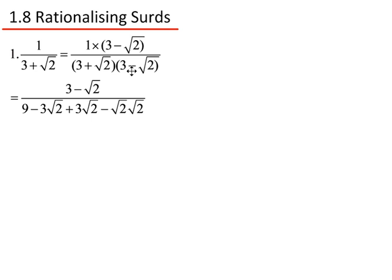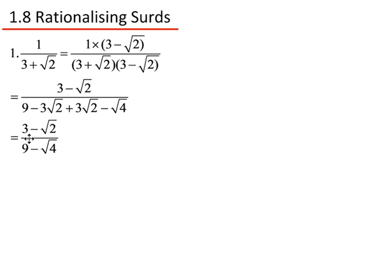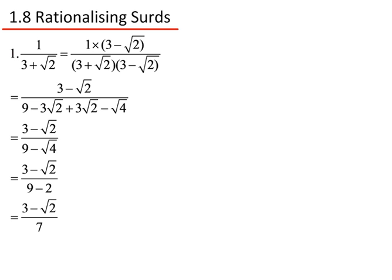On the bottom, I have 3 times 3 gives me 9. Then 3 times root 2 gives me minus 3 root 2, then 3 times root 2 gives me plus 3 root 2, and root 2 times root 2. The minus 3 root 2 and plus 3 root 2 cancel to nothing, and root 2 times root 2 gives root 4. So I have 3 minus root 2 divided by 9 minus root 4. The square root of 4 is 2, so this becomes 3 minus root 2 divided by 9 minus 2, which is 7. The answer is 3 minus root 2 divided by 7.